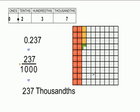Now, what if I colored 237 of these blocks? As you can see, 10, 20, 30, 40, 50, 60, 70, 80, 90, 100.